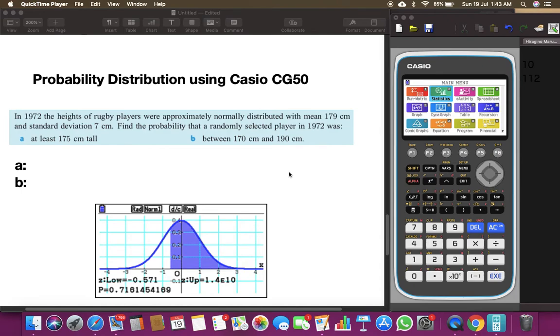Today we are going to do a probability distribution problem. It says that in 1972 the heights of rugby players were approximately normally distributed with a mean of 179 and standard deviation of 7 centimeters.